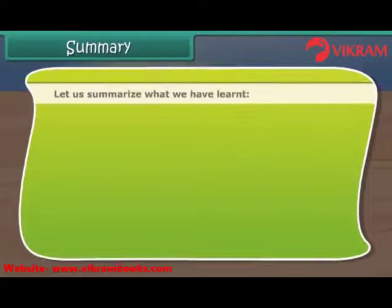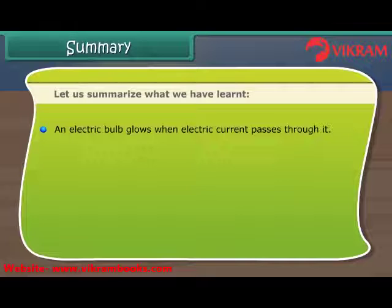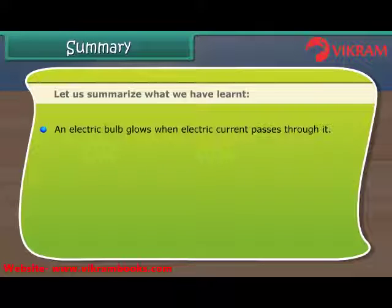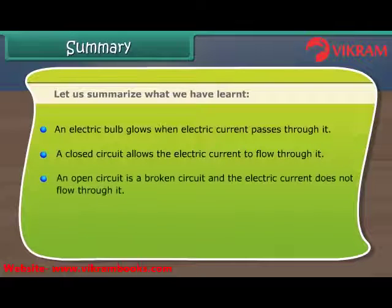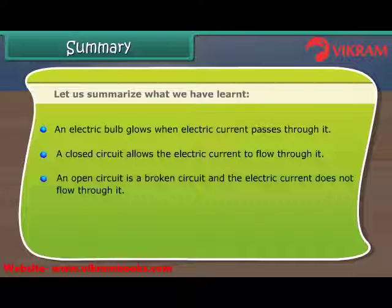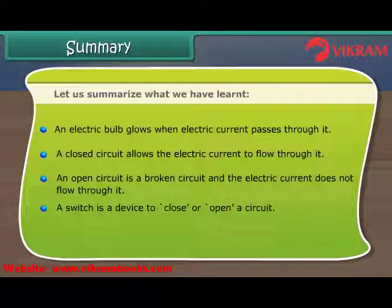Let us summarize what we have learned. An electric bulb glows when electric current passes through it. A closed circuit allows the electric current to flow through it. An open circuit is a broken circuit and the electric current does not flow through it. A switch is a device to close or open a circuit.